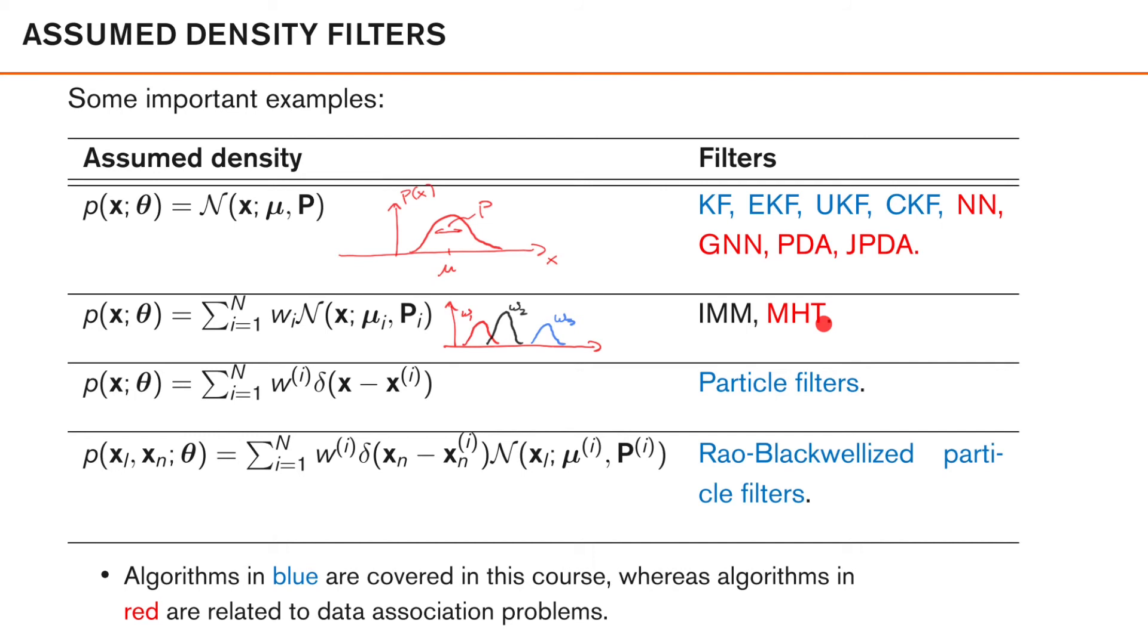Our next parameterization is a bit different. In this case, we describe our density using a sum of n Dirac delta functions, which all have a weight associated with them and a state. The state here we usually call our particle. We describe our density like this, which turns out to be a very general representation that in theory can be used to approximate any given density arbitrarily well. Compared to our Gaussian mixture here, n here is typically in the thousands or even more. We will look at this in detail in a later section when we discuss the particle filters, which are nonlinear filters which use this type of representation.